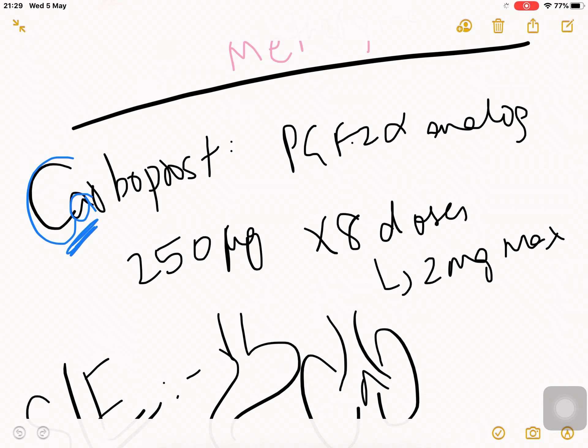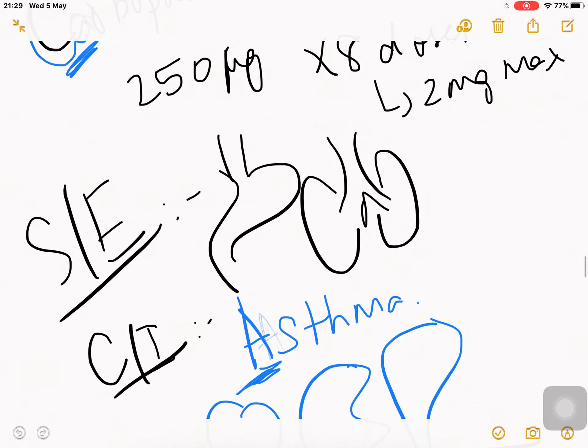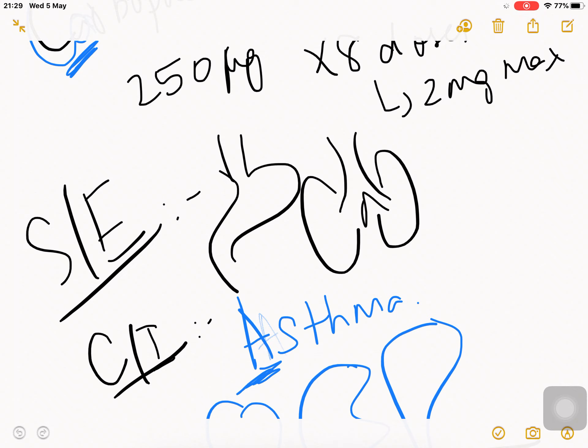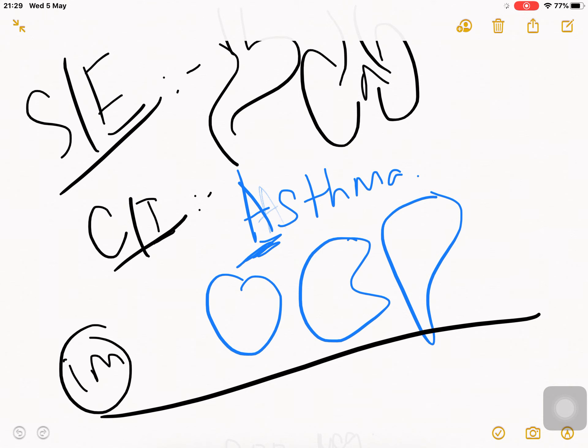Carboprost is a PGF2 alpha analog. The dose is 250 micrograms, but up to eight doses can be used, which is two milligrams. Remember 'CA' - the second letter is A for asthma. Never give this drug to an asthmatic patient. Side effects are diarrhea and bronchoconstriction. Bronchoconstriction is crucial - you can't give it to someone with asthma. Other contraindications are heart disease, renal disease, and liver disease.